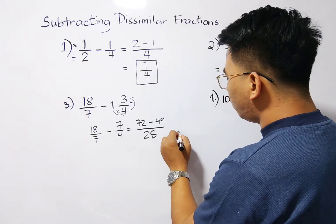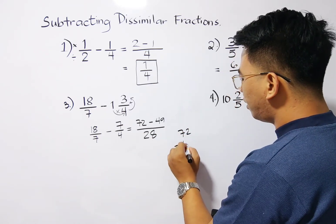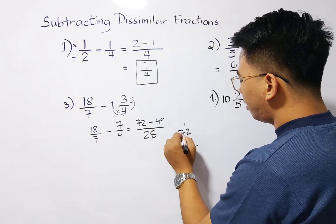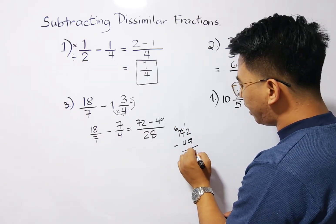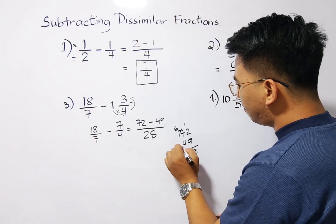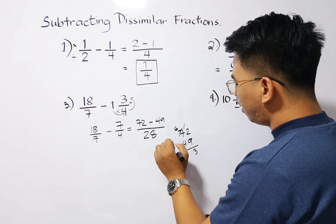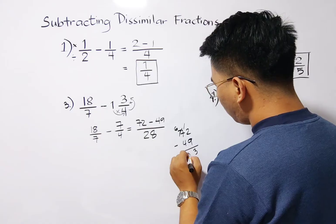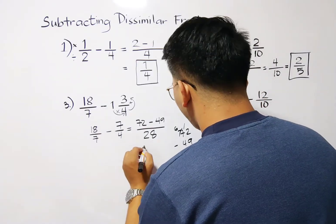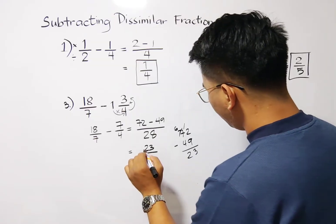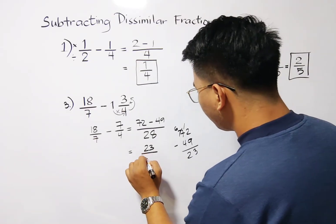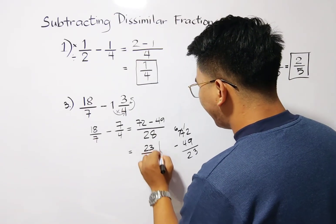So this is 72 minus 28 divided by 4, that is 7, times 7, that is 49. So all we need to do is to simplify your numerator. So as you can see, 72 minus 49, this is 12 minus 9, that would be 3, and 6 minus 4, that is 2. So we have here 23 over 28. This is the final answer.